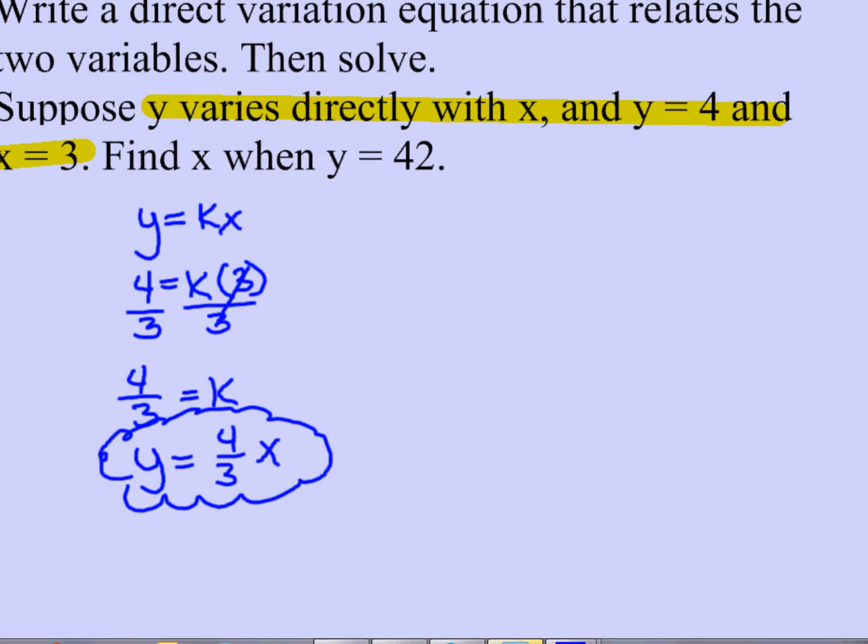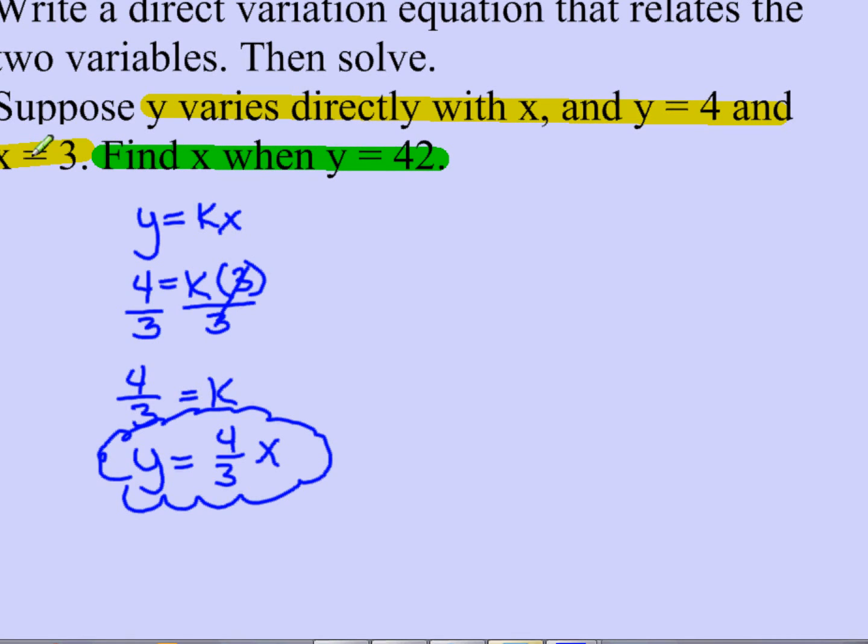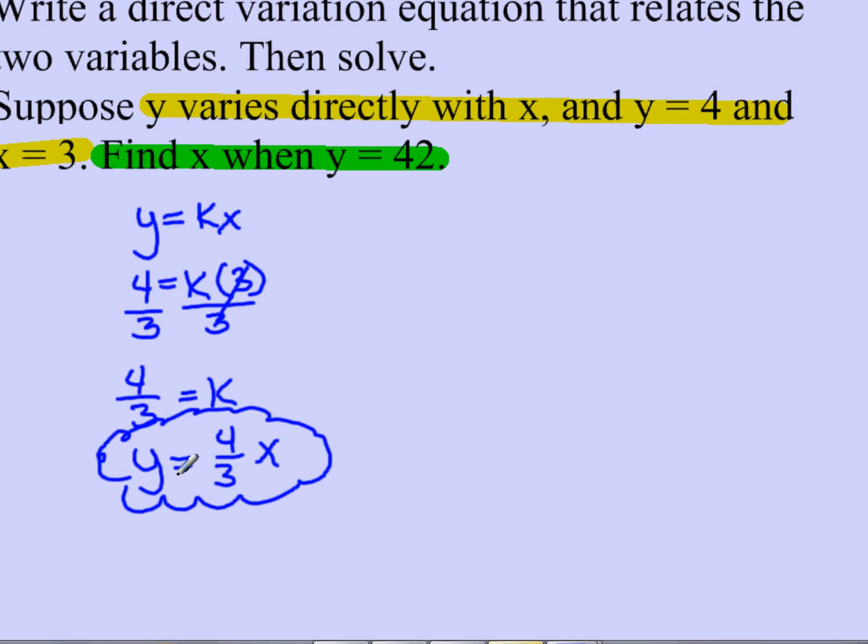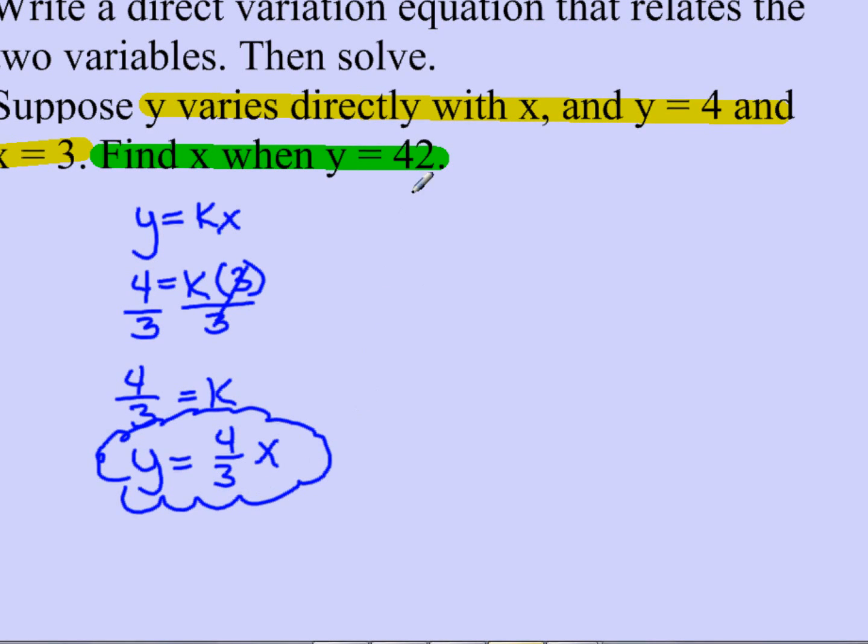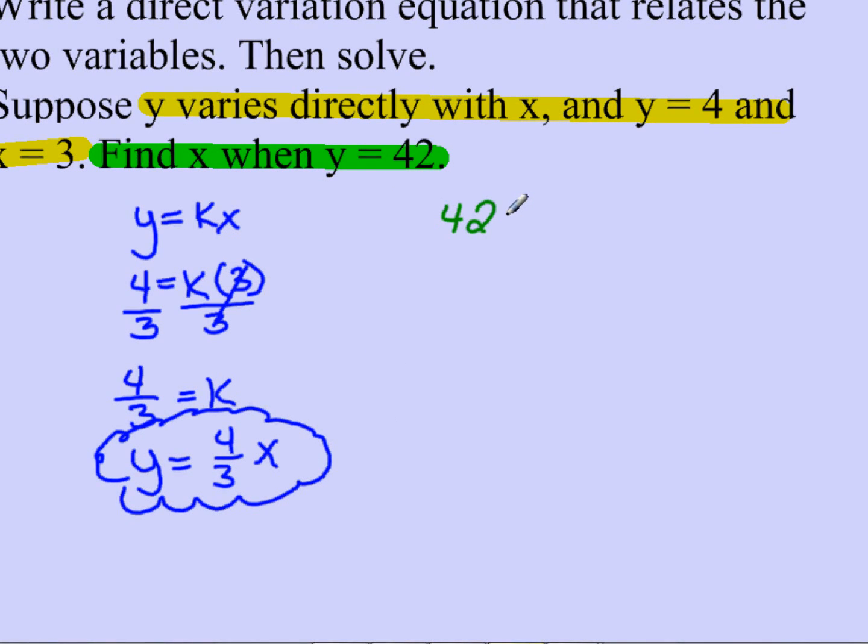Now I answer the second portion. Find x when y equals 42. Well, here's my equation y equals 4 thirds x. I know what y is. Y is 42, so I'm going to substitute 42 equals 4 thirds x.